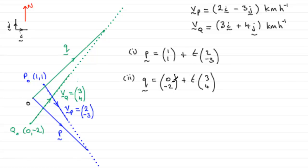Okay? So, you can either leave it like this in column vector form or you could write it in i's and j's. If you did, then you've got 1i plus 2t i. So, you could say 1 plus 2t i. And for the j components, you've got 1 minus 3t in the j direction. So, that's 1 minus 3t in the j direction.